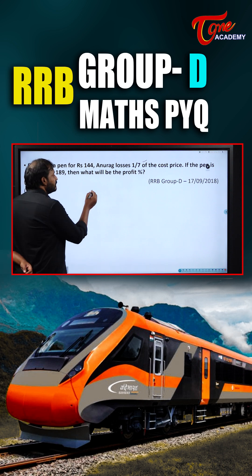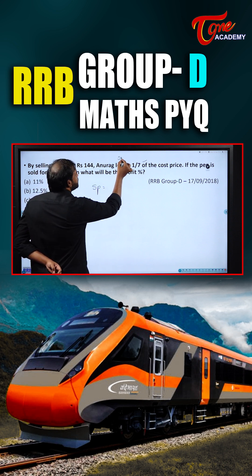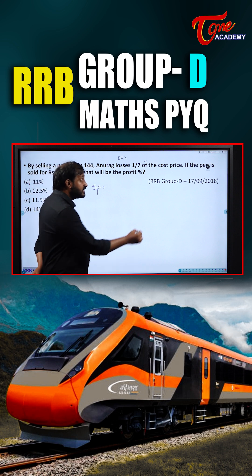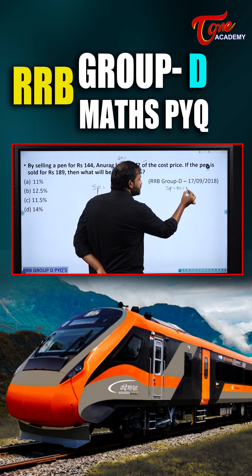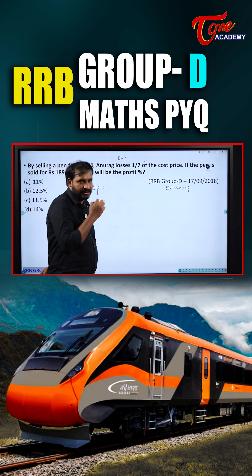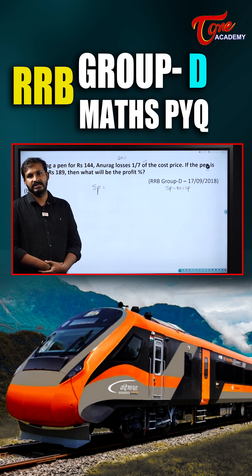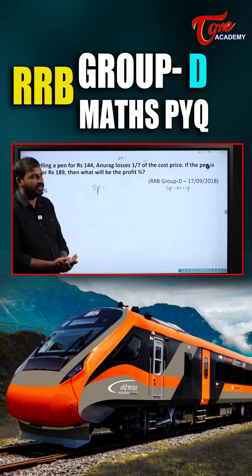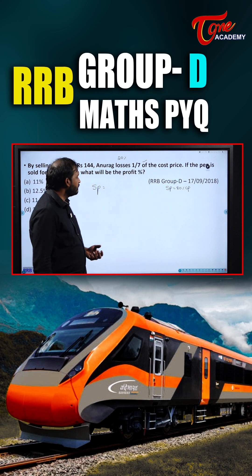Students, please be careful. In an earlier case where he loses 20%, we wrote SP = 80% of CP, because he lost 20%. Here it is telling that he is losing 1/7th of the cost price. The approach is the same — there is no difference; earlier it was a percentage, now it is a fraction.